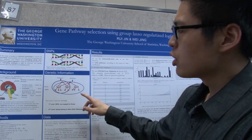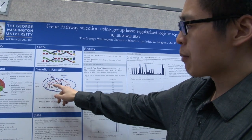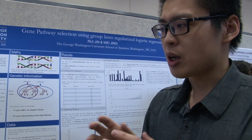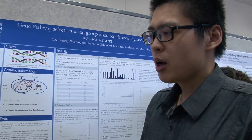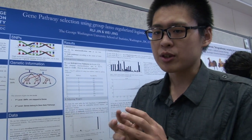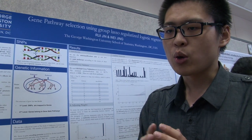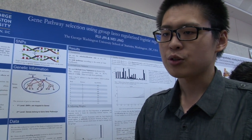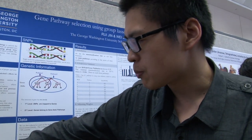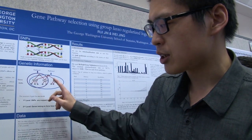The second level is between genes and pathways. In this level, each gene can be mapped to more than one pathway, which means there is some overlap at this level. If there is overlap, the data are highly correlated and highly overlapped. So we need to use a different method to analyze this kind of structure — our method is sparse group lasso.